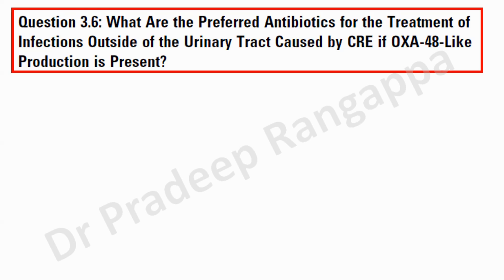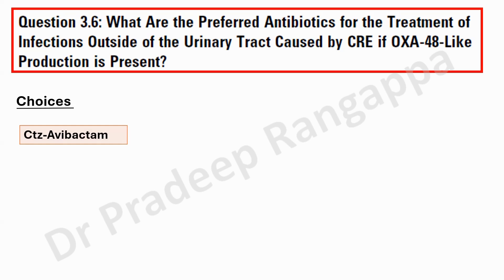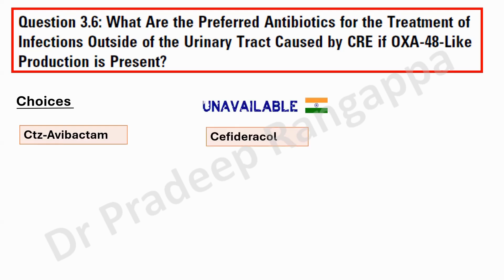If you look at the antibiotic choices suggested by IDSA 2024, there has been a de-emphasis on polymyxin and colistin. The only recommended drug for OXA-48 by IDSA is ceftazidime-avibactam. You do not need to combine it with aztreonam — unlike MBLs or NDM — because OXA-48 belongs to Class D serine carbapenemase, not Class B. Only Class B MBLs need aztreonam. The second recommended option is cefiderocol, which is currently unavailable in India but awaited. More than 95% of OXA-48 isolates are sensitive to both ceftazidime-avibactam and cefiderocol.